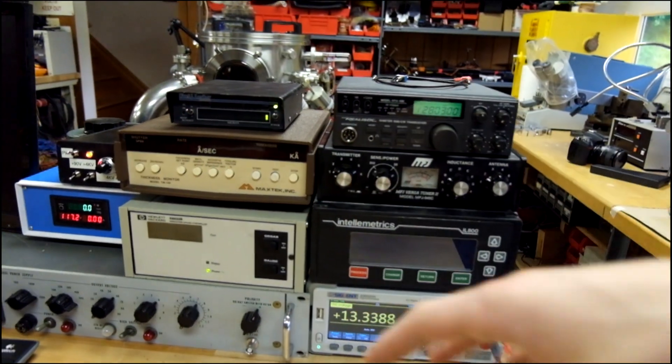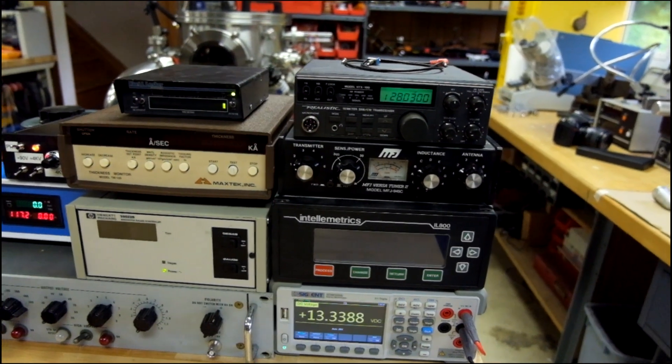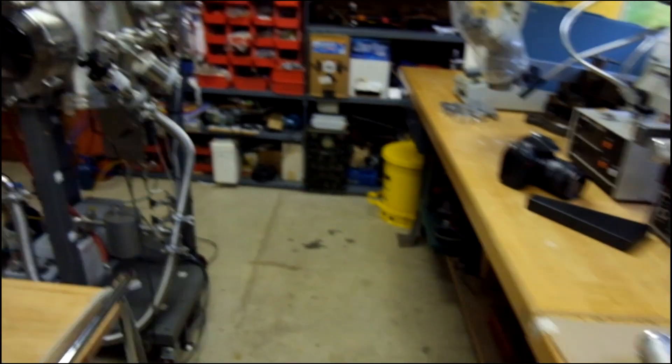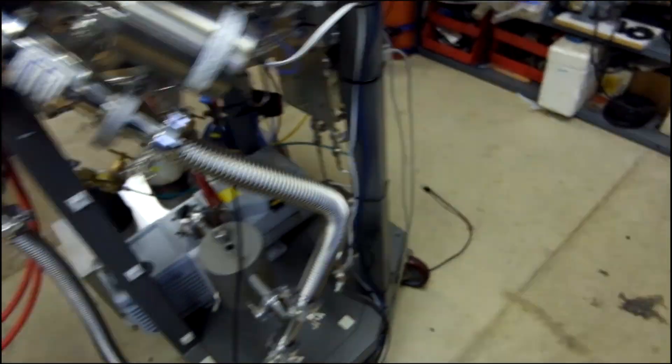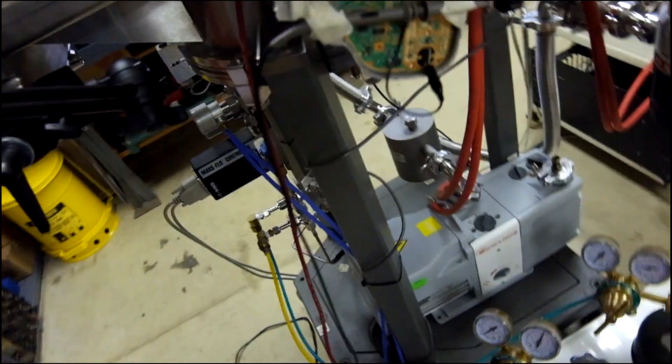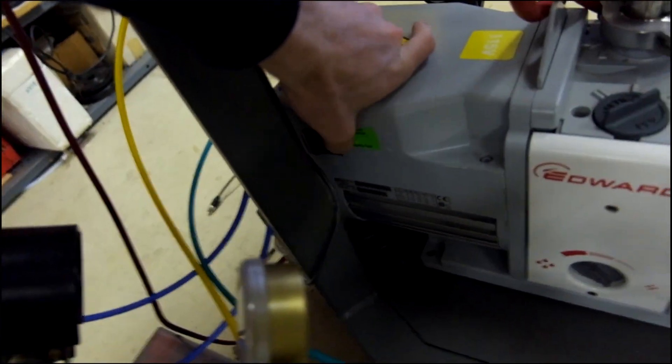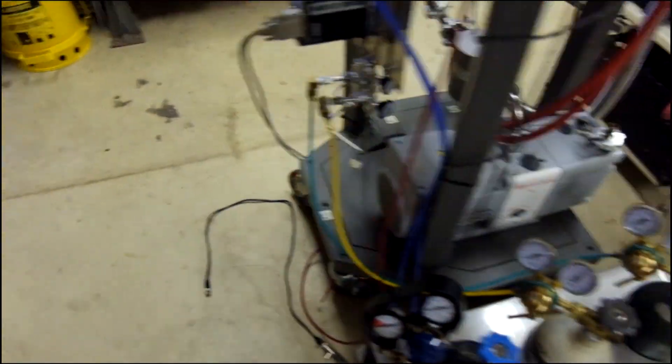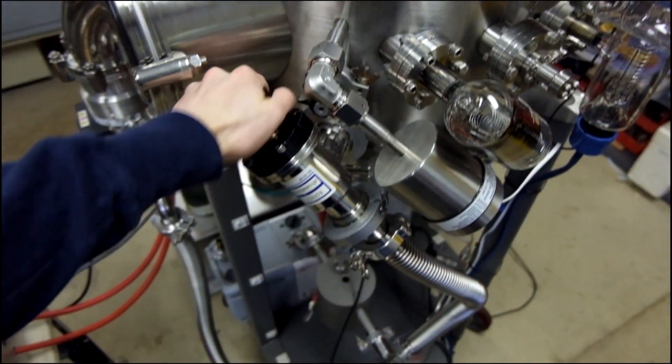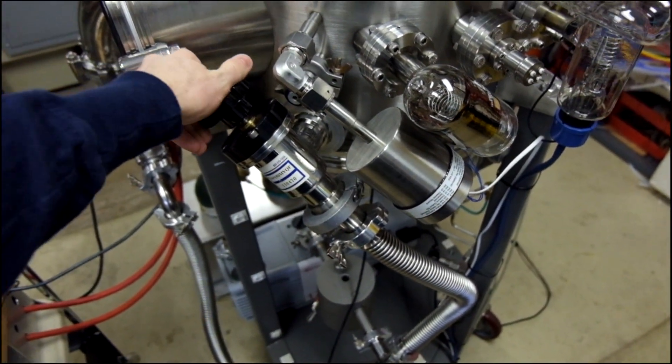So now I have all the gauges on and I'm going to go ahead and turn the mechanical pump on and that's going to start the pump down. That's going to take about 10 minutes and it'll pump down to about 50 millitorr. Then I'll pump down a little bit more and we'll start the turbo. So hit that guy and then I'm going to open up the isolation valve so it can actually start pumping from the chamber.